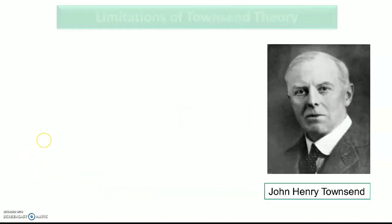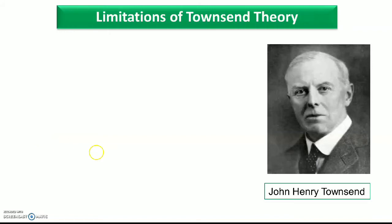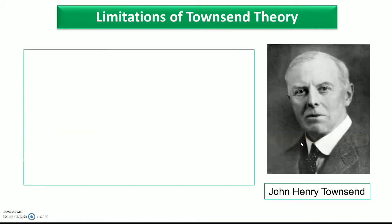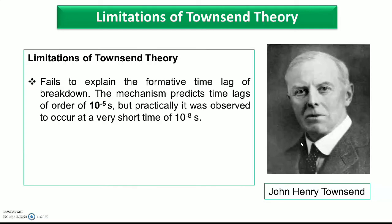So these are all called limitations or failure points of Townsend's theory. Now let's talk about the limitations of Townsend's theory. This is the picture of John Henry Townsend. Generally, Townsend's theory failed to explain the formative time lag of breakdown.